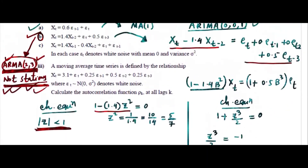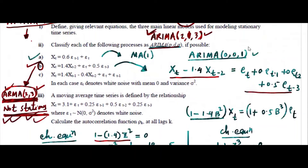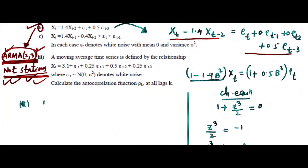Now go to part C. If you see this one: Xt minus 1/4 Xt minus 1, and 0.4 — let me write: 1 minus (1/4)z plus 0.4z squared equals 0. Multiply by 10: 4z squared minus 14z plus 10 equals 0. Then dividing by 2: 2z squared minus 7z plus 5 equals 0.